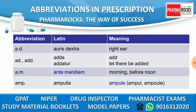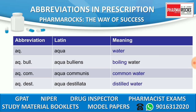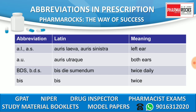AM means 'ante meridiem,' meaning morning or before noon. AMP means 'ampulla,' meaning ampoules. AQ means 'aqua,' meaning water. AQUBULL means 'aqua bulliens,' meaning boiling water. AQUCOM or AQUCOMAN means 'aqua communis,' meaning common water.